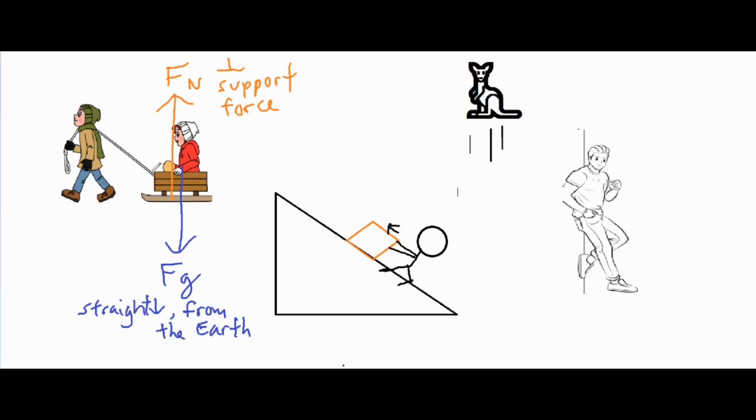For our third force we have a rope tugging the system. Anytime it's something along the lines of a rope or chain or string we call that FT, the force of tension, and that is always some kind of pull from a rope-like object.